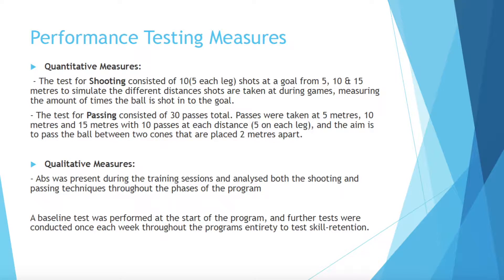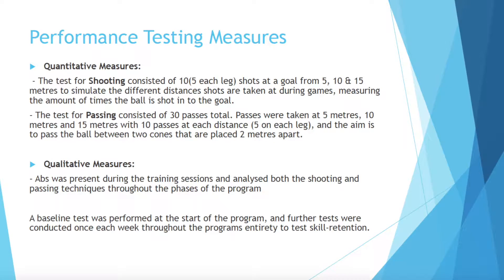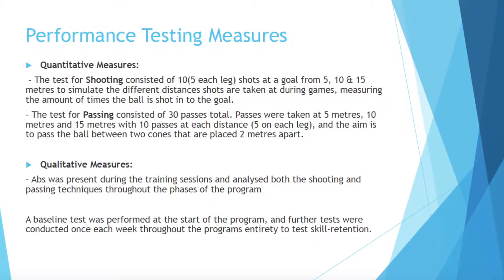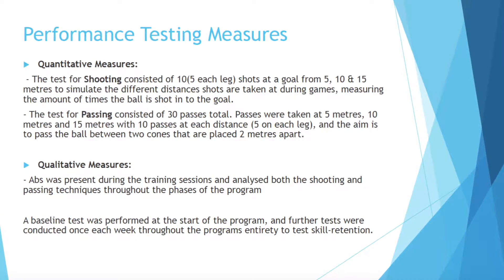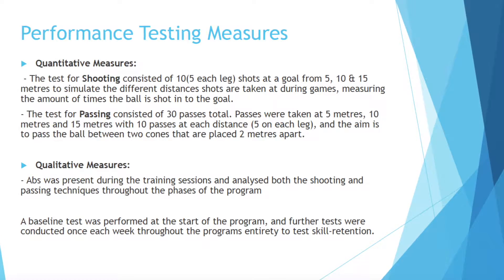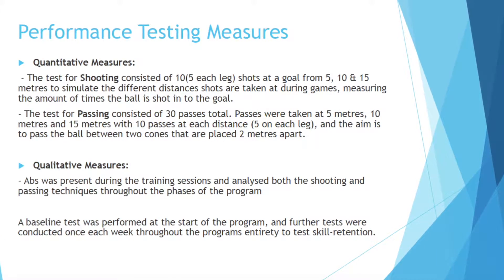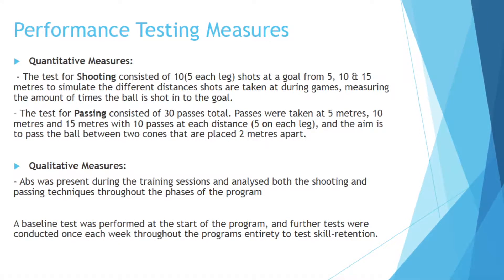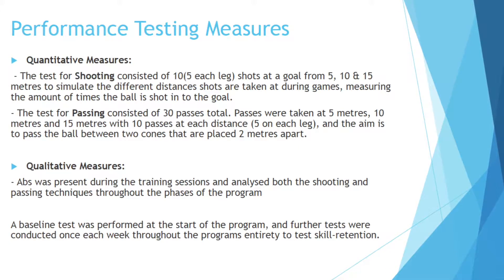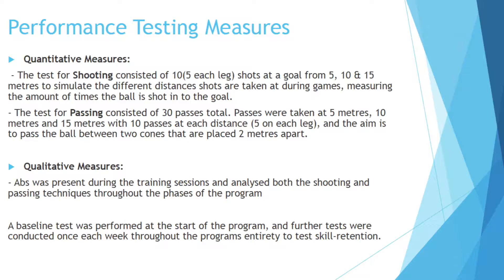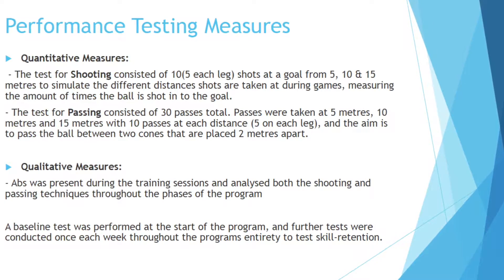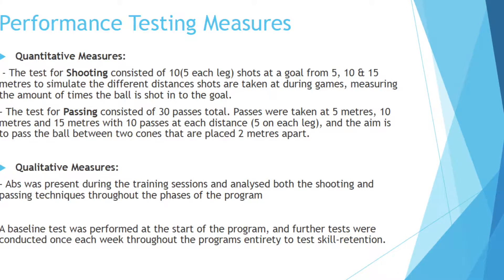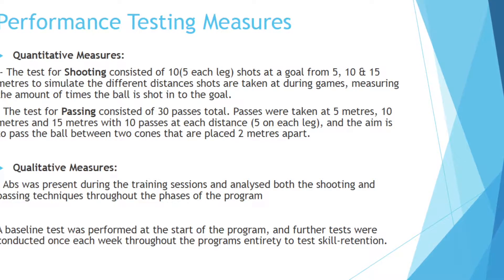Performing testing measures — the quantitative measures: we are testing shooting shots on goal from 5, 10, and 15 metres out, 10 shots each, 5 on each leg. The aim of the passing test is to pass the ball between two cones placed 2 metres apart. For the qualitative measures, I was present during the training sessions and analysed both the shooting and passing techniques throughout the phase of the program.